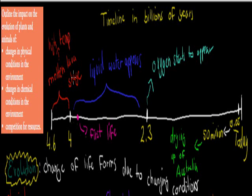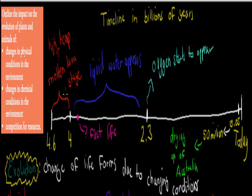Water itself was only in vapor form, only in gas form, and everything was really hot and molten with a lot of lava and crazy temperatures. So you can imagine there wouldn't have been much life around back then, because the conditions in the environment weren't suited for life.